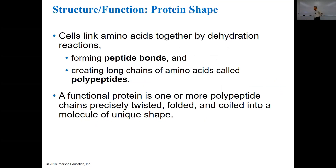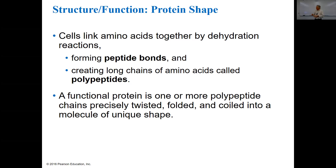Cells link amino acids together by dehydration reactions, just like carbohydrates and lipids, forming what's called peptide bonds. A peptide bond is a covalent bond between a nitrogen and a carbon that's doubly bonded to oxygen. This creates long chains of amino acids called polypeptides — that's a protein.